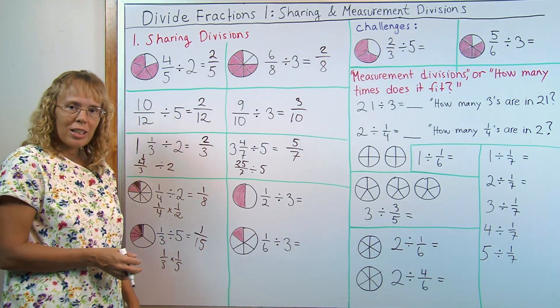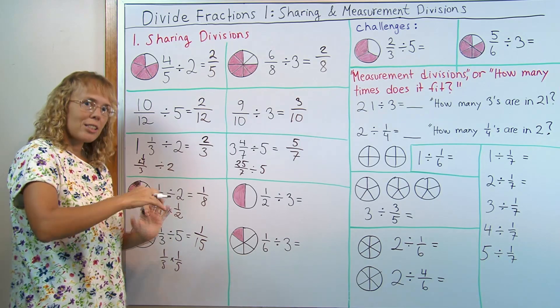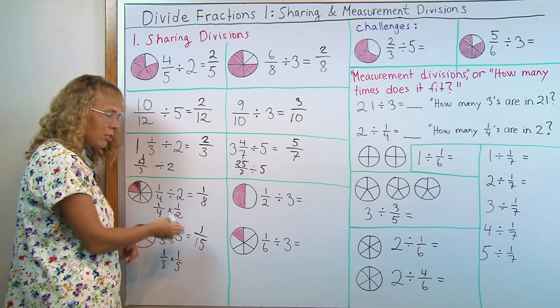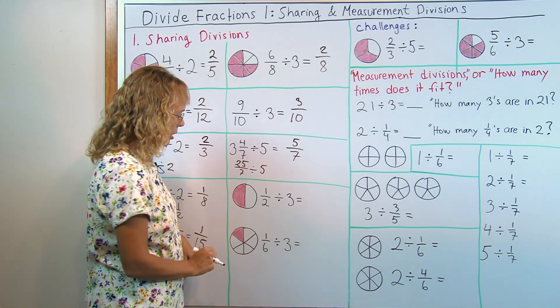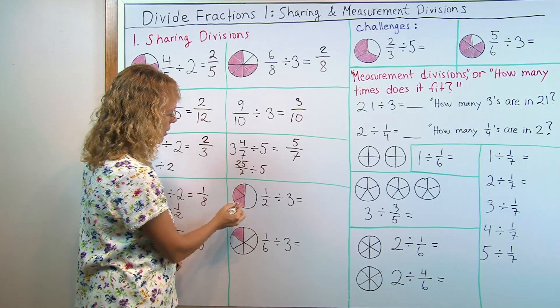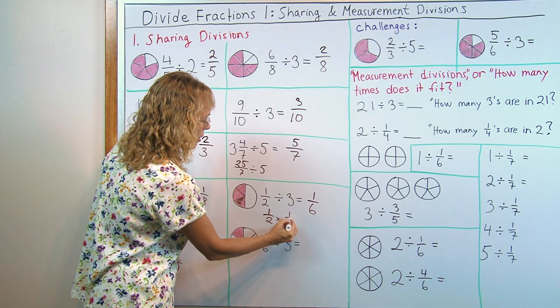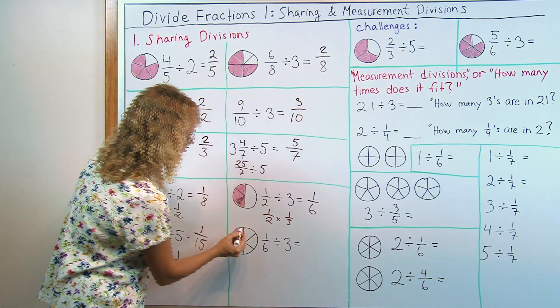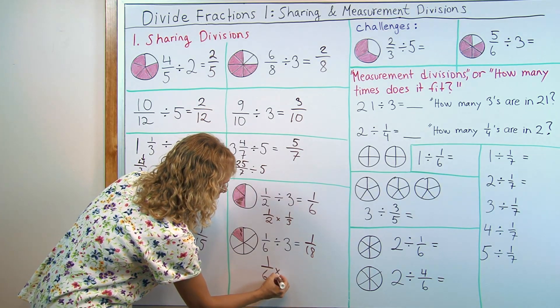And we want to do that also because after some of this we will want to arrive to the rule of fraction division which has to do with multiplication. Each division in the rule will be changed into a multiplication by the reciprocal. And here's one more of those. One-half divided by three. The answer is one-sixth, which is the same as one-half times one-third. Or one-sixth divided by three. Divide this one slice into three and then one of those is one-eighteenth, which is the same as one-sixth times one-third.